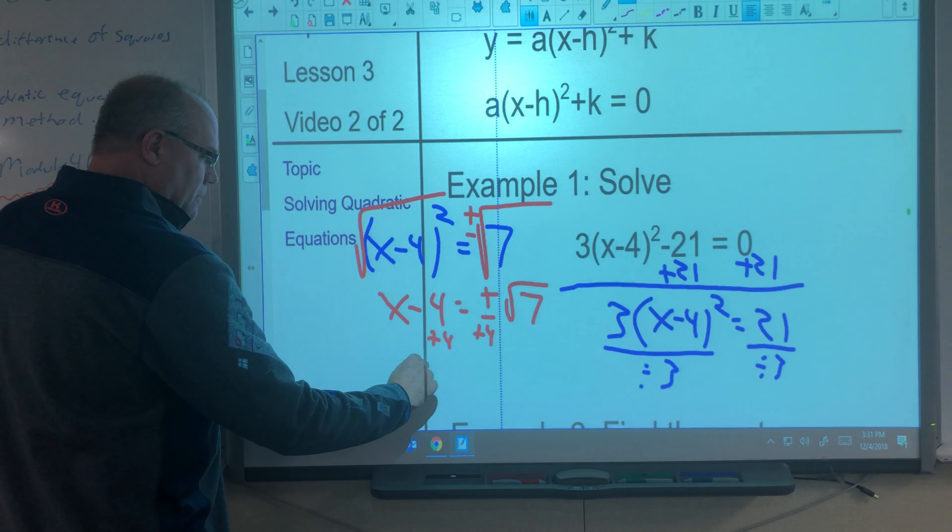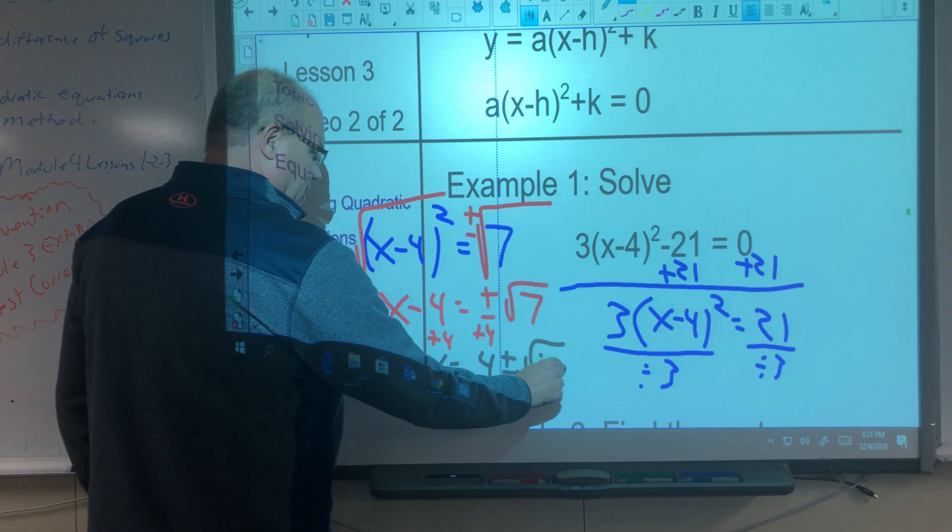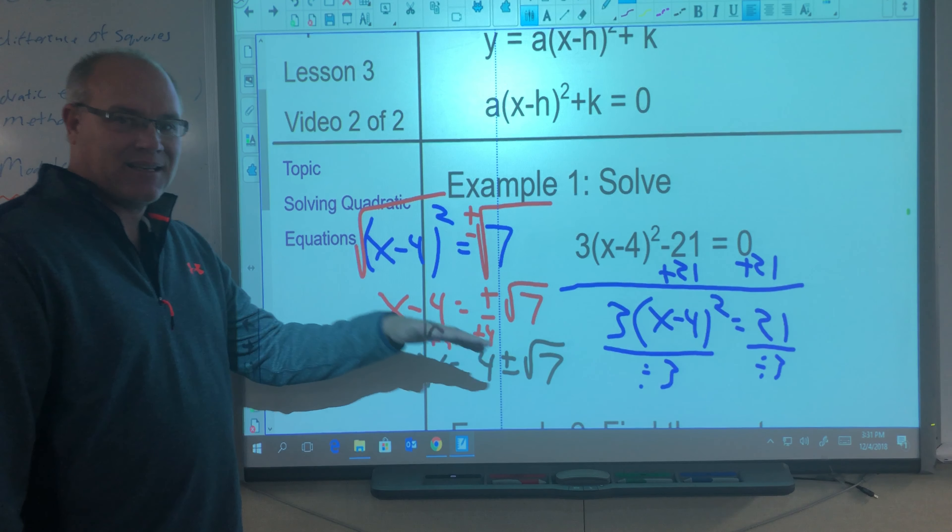So then I'm going to get x equals 4 plus minus the square root of 7. That is the exact solution.